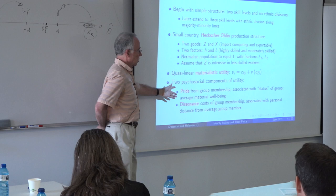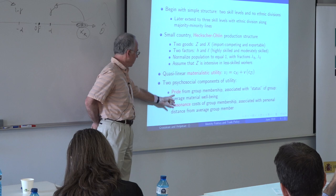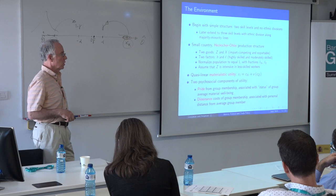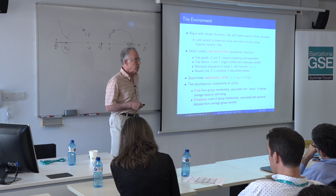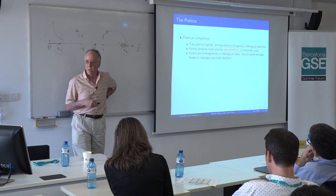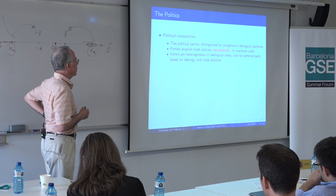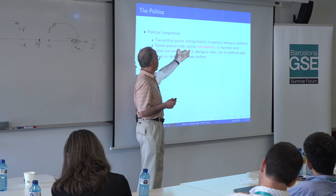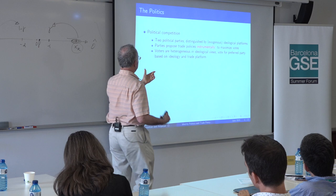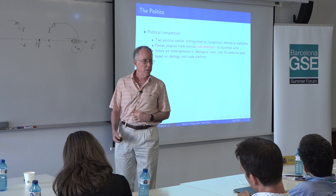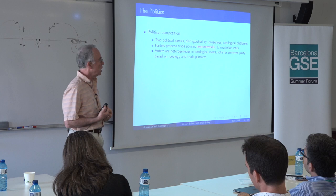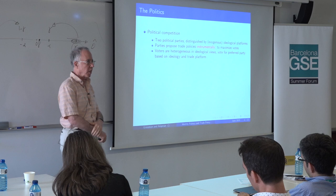Getting back on track: the pride comes from membership in the group, and the dissonance costs come from differences between yourself and the prototypical member of the group you might contemplate joining. The political model is off the shelf: two political parties with different exogenous ideological positions. They have some policies they use instrumentally to maximize their votes — they're willing to support any policies that win them popularity, perhaps so they can implement their ideological agenda or because they like being in power. Voters have heterogeneous views over ideology — some strongly conservative, some left of center — and they vote for their preferred party taking into account both the trade platform and ideology.